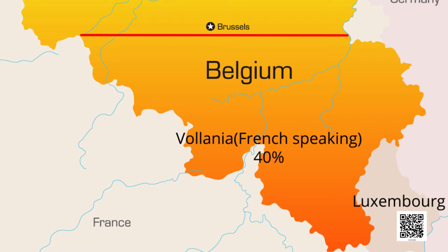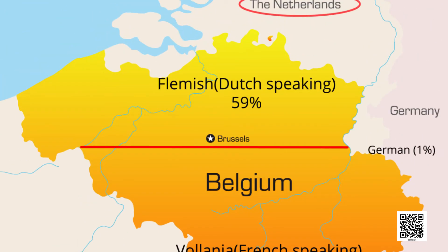The southern part is called Wallonia, and here French-speaking people live, constituting 40% of the total population. This is because in the west and southwest of Belgium, France lies nearby. In the eastern part, German is spoken by the people and they constitute 1% of the total population.